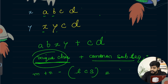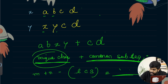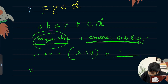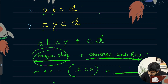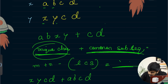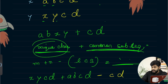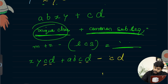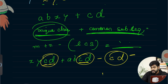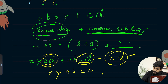Because all the characters — that is M plus N — minus the common subsequence gives us the answer. For example, X, Y, C, D and A, B, C, D: if we subtract C, D (the common subsequence) once, then C, D is counted just once instead of twice. So what remains is X, Y, A, B, and then C, D — which is exactly the result we are trying to find.